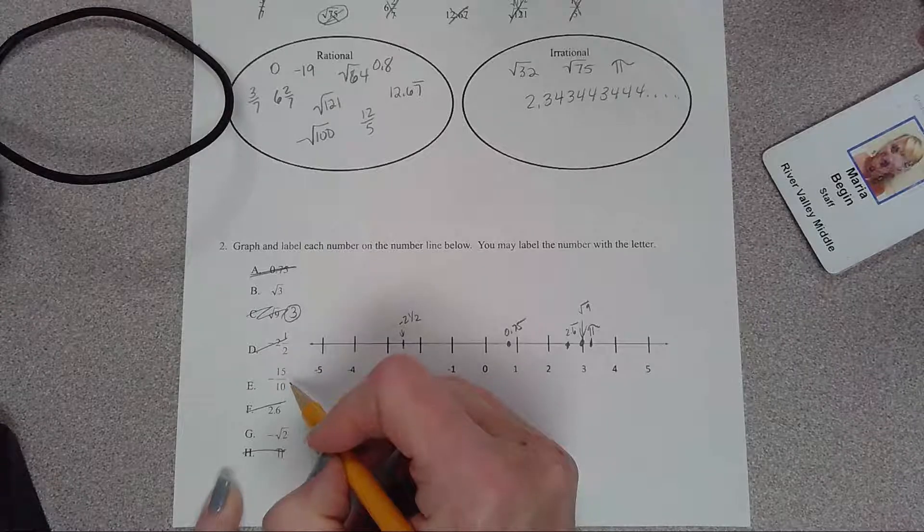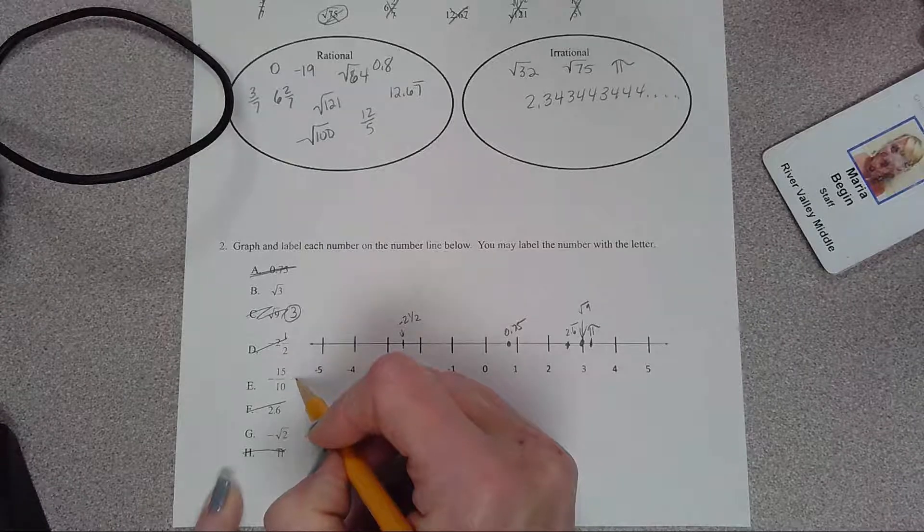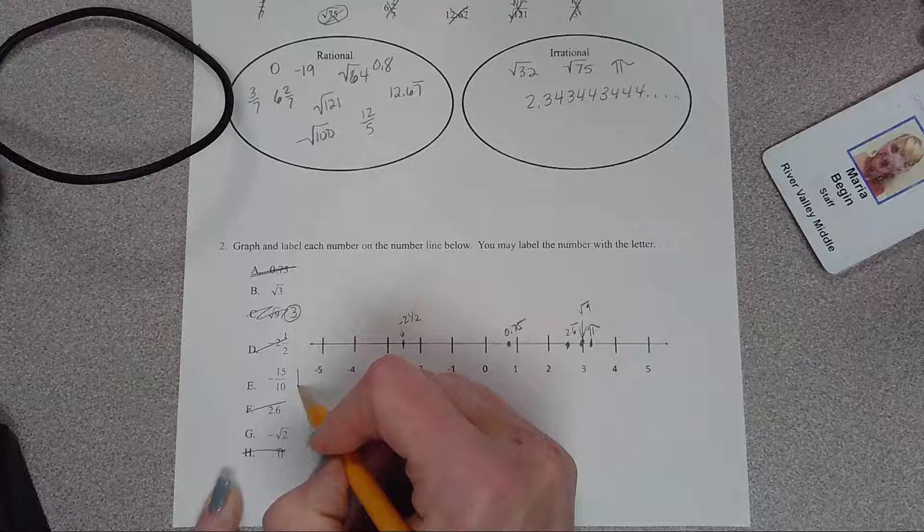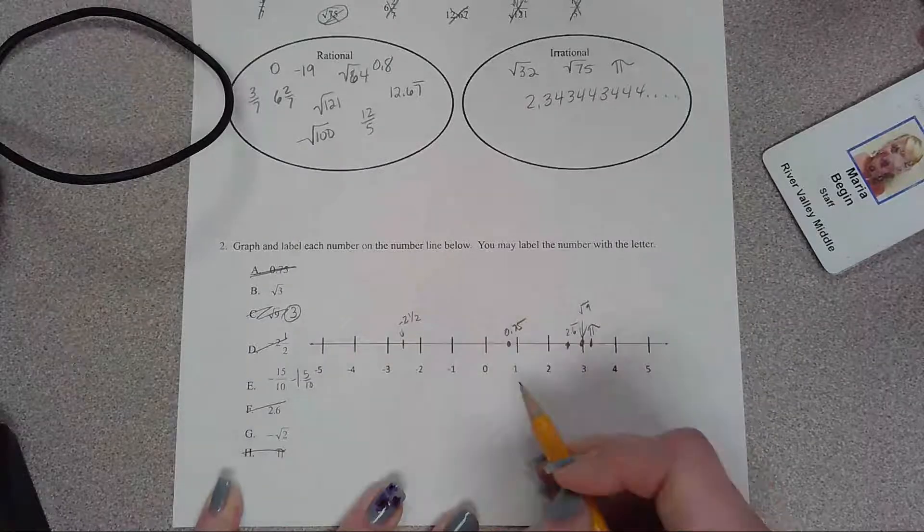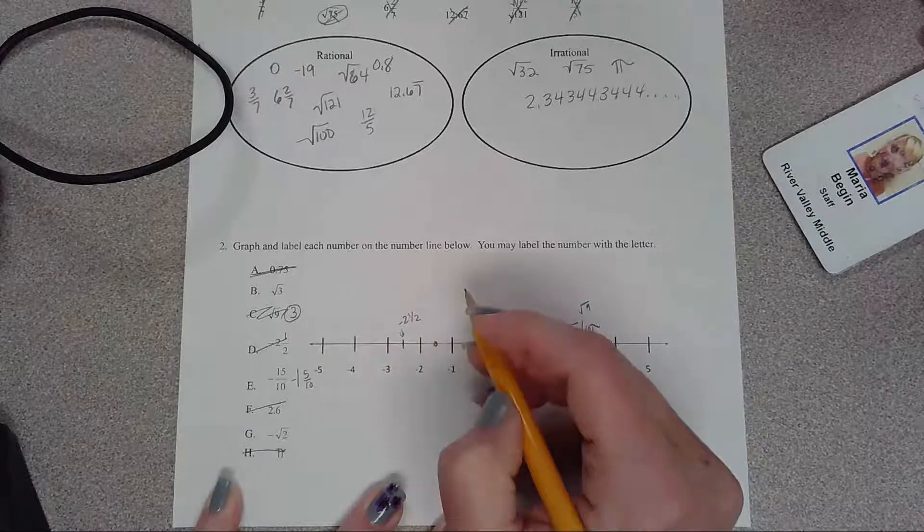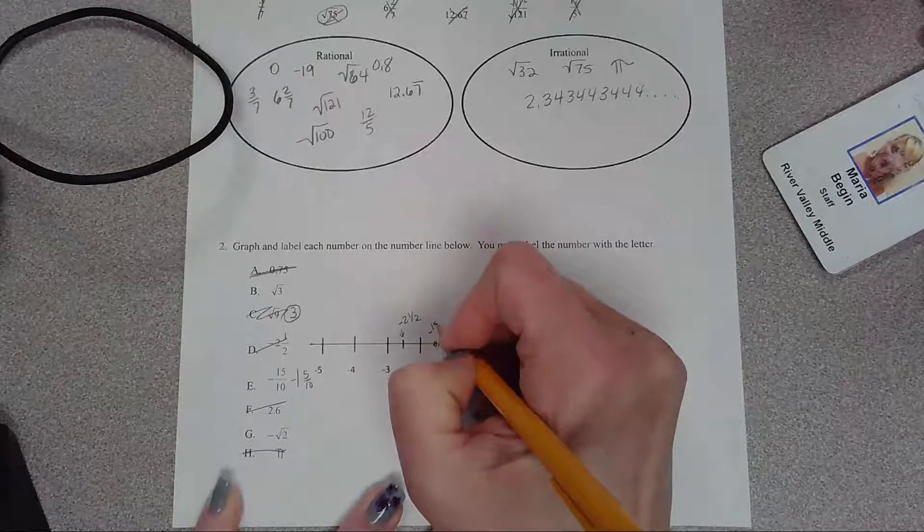15 over 10. Mixed number of 1 and 5 over 10, so it's a negative 1 and a half. So this is negative 15 over 10.